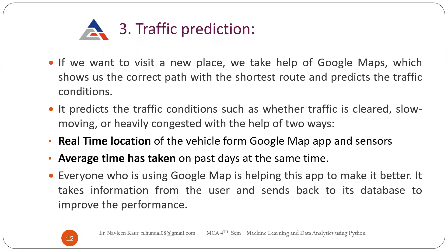Next is traffic prediction. This is also one example of machine learning. Whenever you put your destination on GPS, directions are available, and it also shows places which are highly crowded where traffic exists — giving you red lines on the map. Red means it is highly crowded. So if you want to visit a new place, we can take the help of Google Maps, which shows us the correct and shortest path.